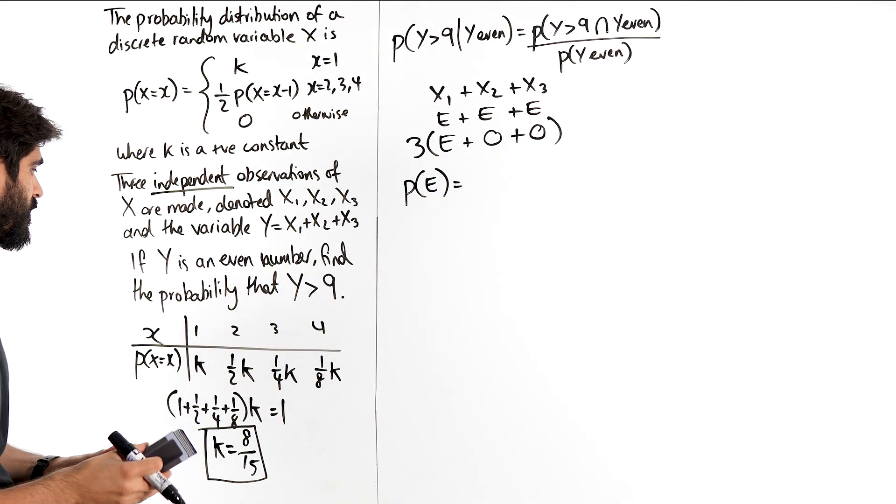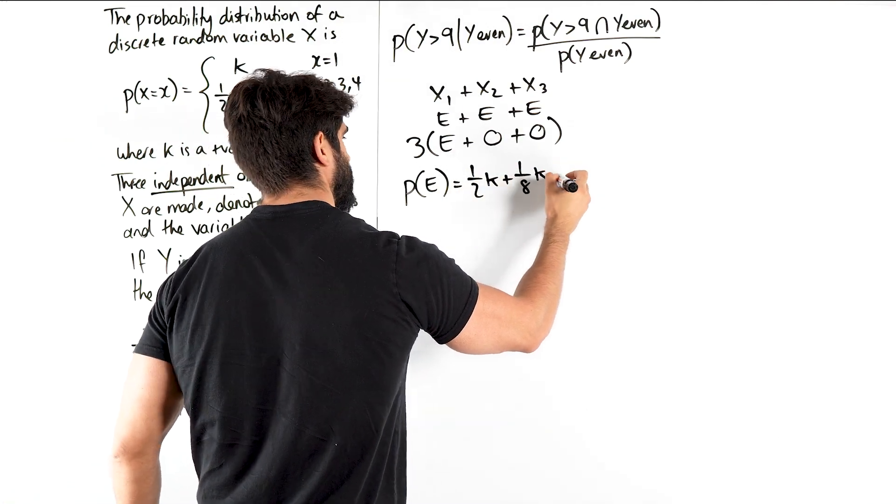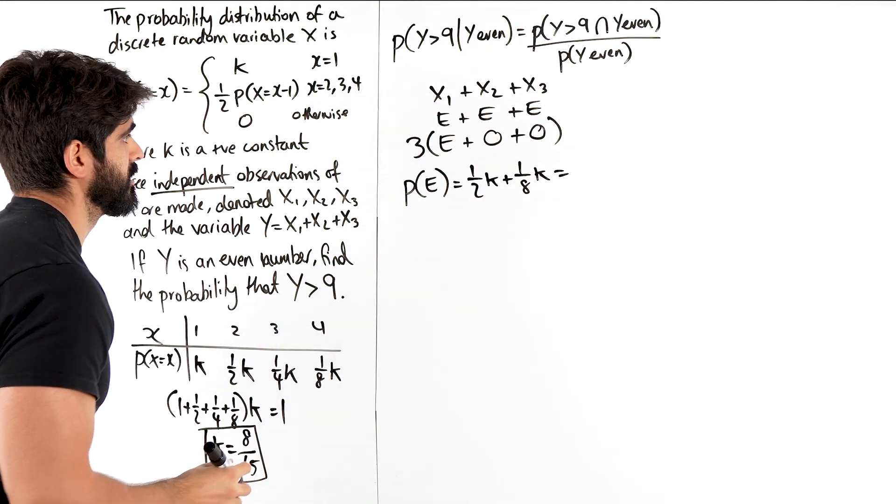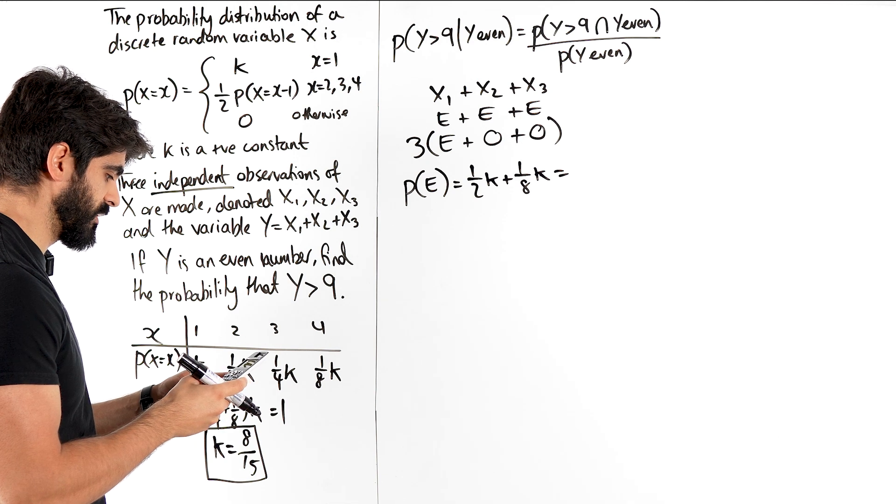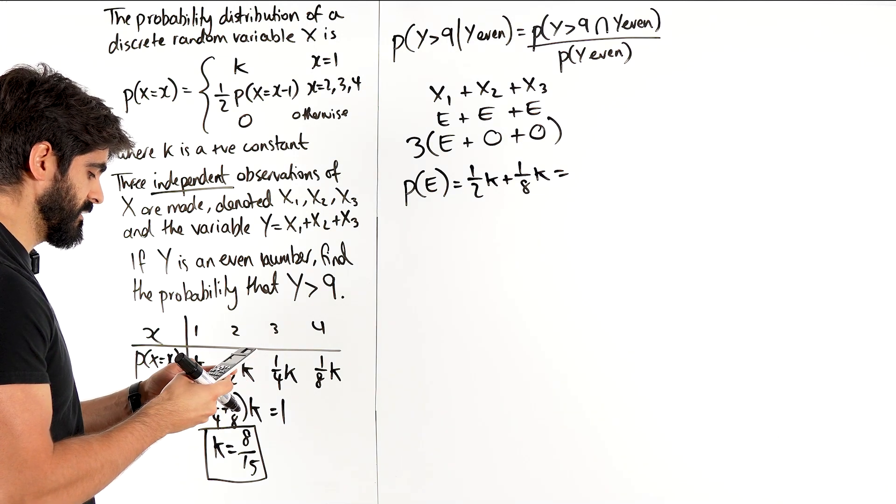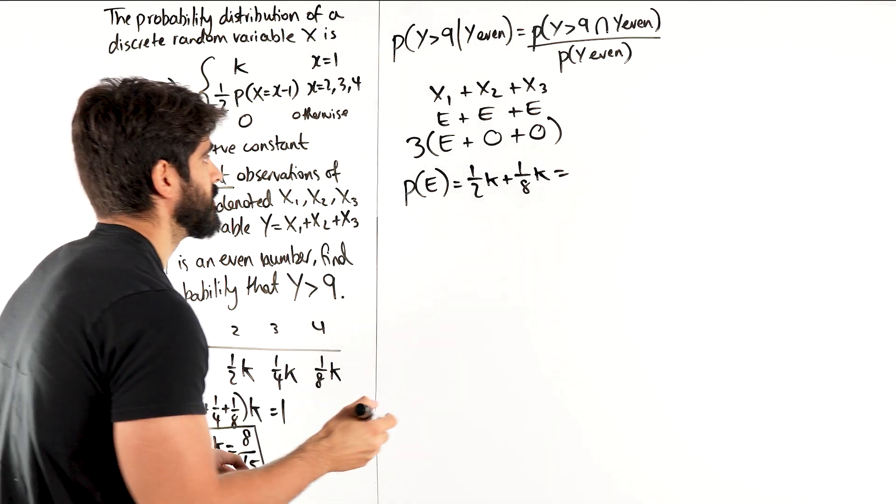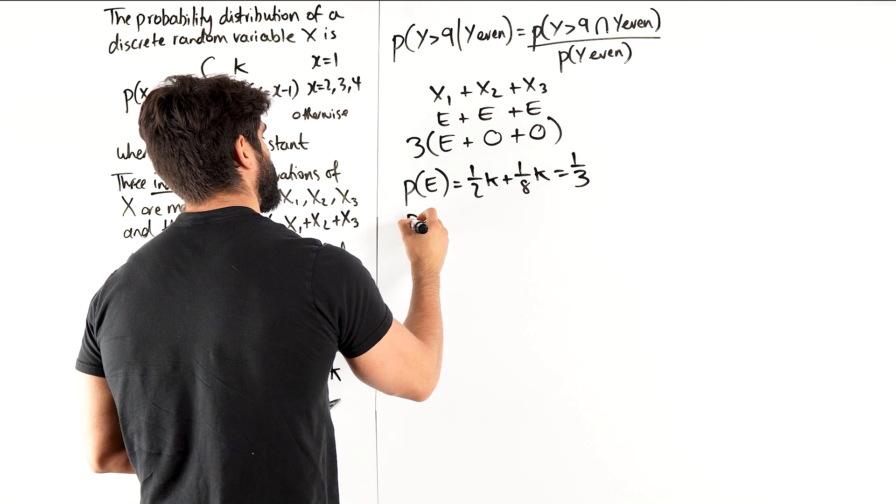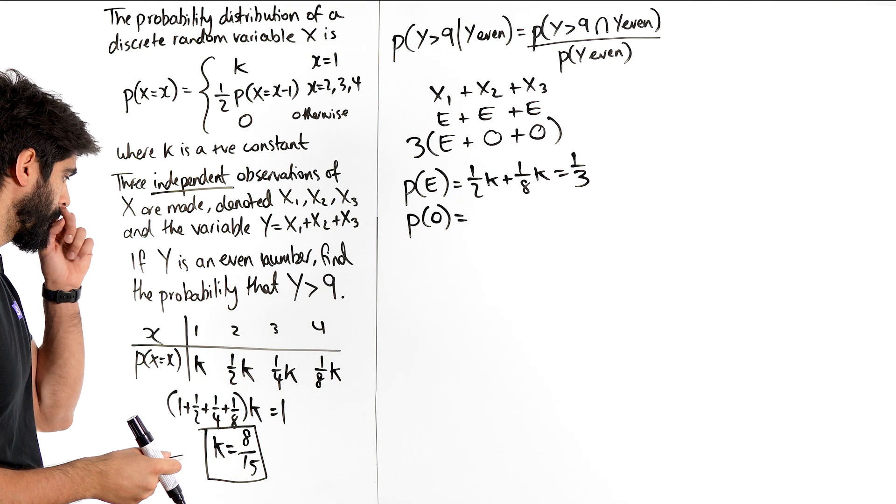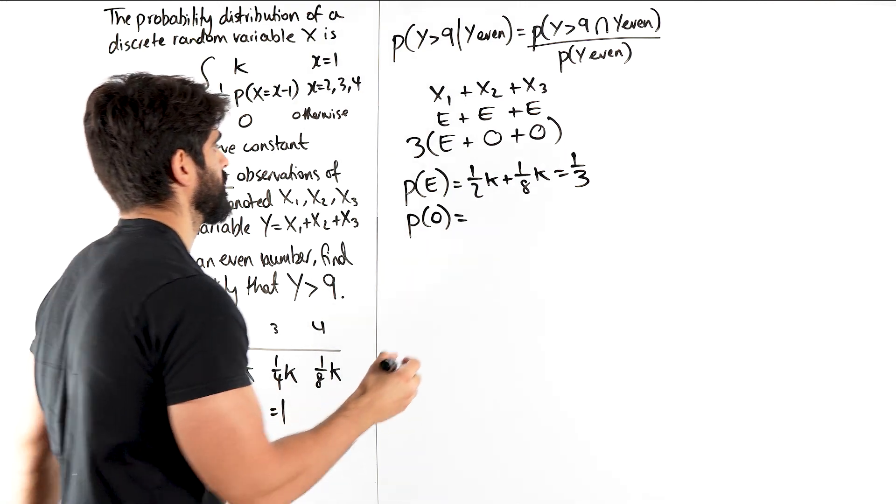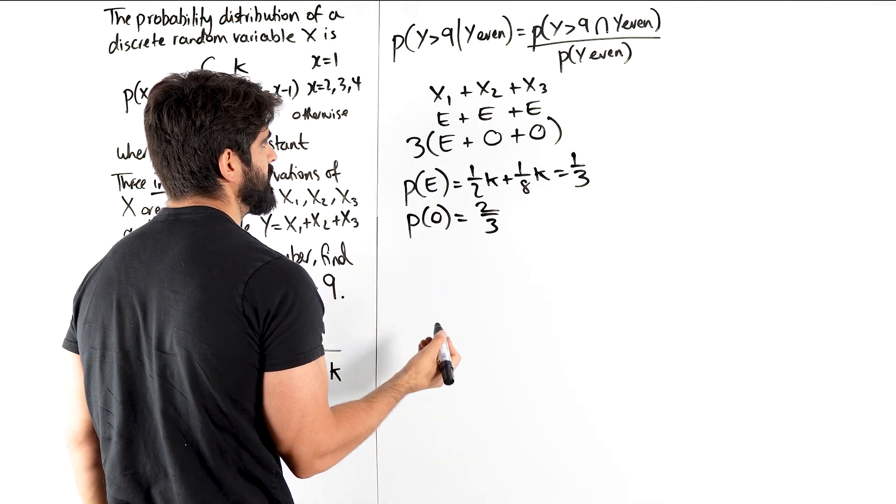So let's just calculate the probability of getting an even number because the key word here is that it's independent observations, meaning we could just do even times even times even. So what's the probability of finding an even number? Well, we just do these two added together, a half K plus 1 over 8 K. I have 8 over 15. I'm going to store that. So I'm doing 0.5 A plus 1 over 8 A. So 1 third. And the probability of an odd number, it's just 1 minus that, right? 2 thirds.